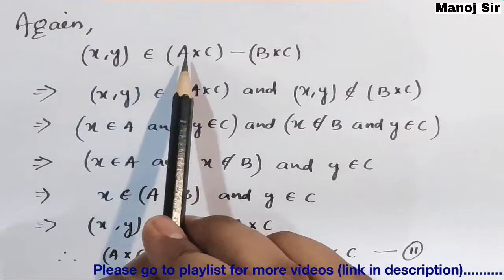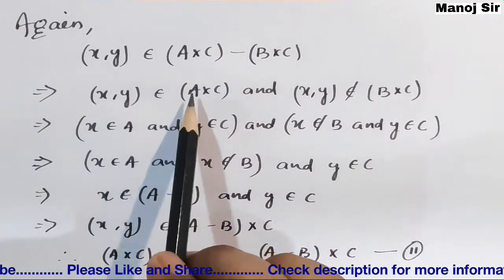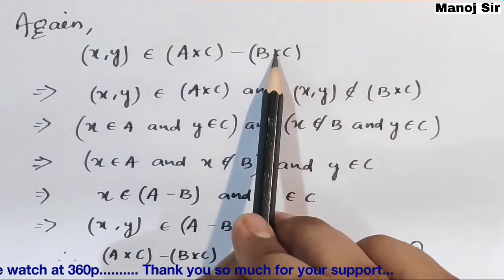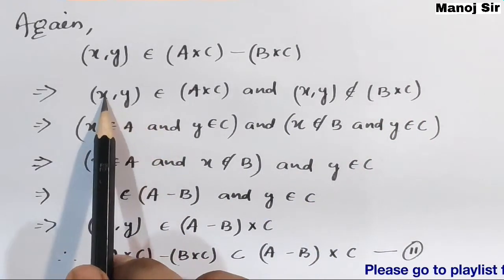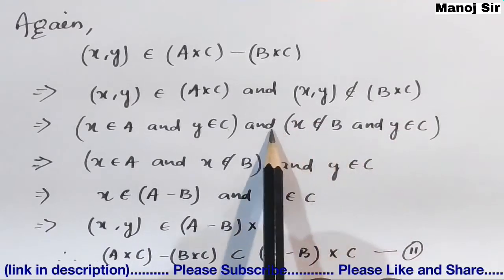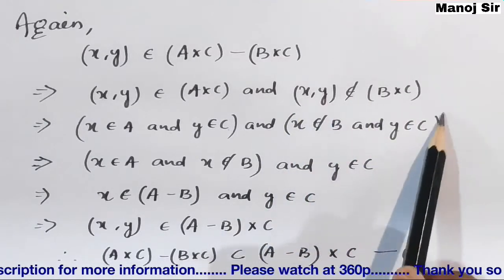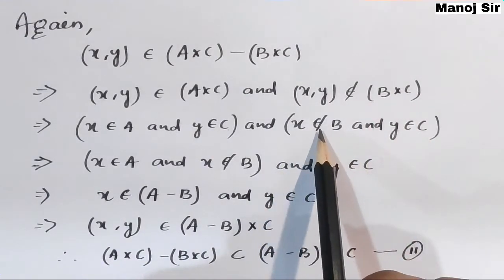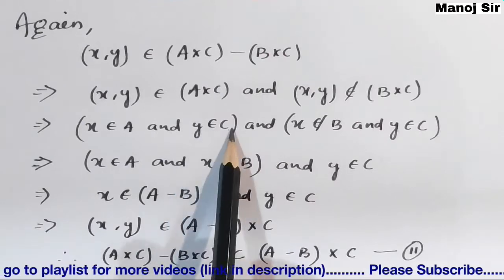Now for the second part. Let (x, y) belong to A × C minus B × C. Because of the minus sign, (x, y) belongs to A × C and (x, y) does not belong to B × C. From (x, y) belonging to A × C, we get x belongs to A and y belongs to C. From (x, y) not belonging to B × C, we get x does not belong to B and y belongs to C.